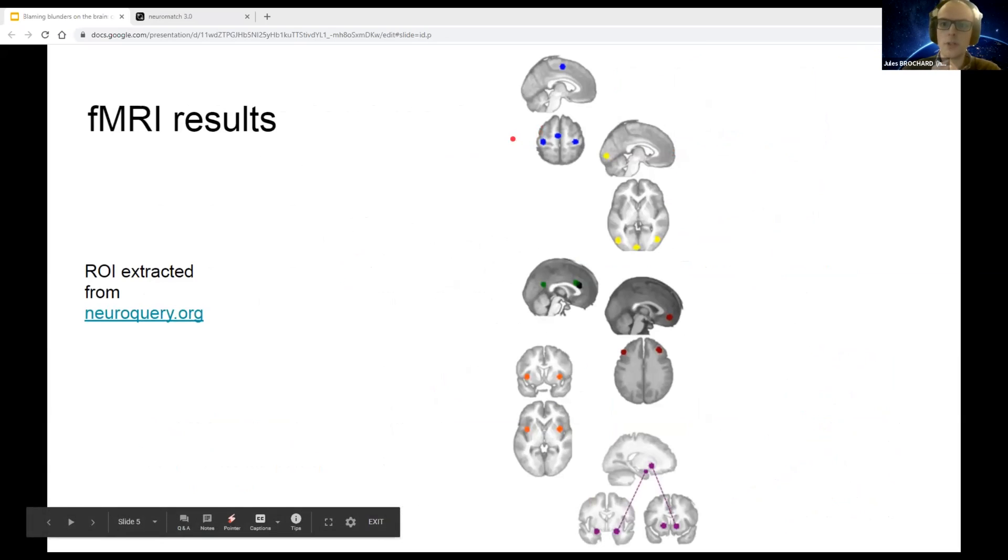Then we use this model to look at the BOLD signal of the subject in a bunch of different regions: the motor area, the visual area, the cingular area, the orbitofrontal cortex, insula, amygdala, and striatum. We extracted the similarity matrix.